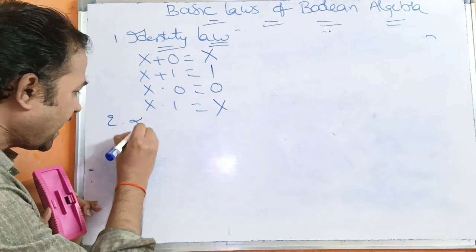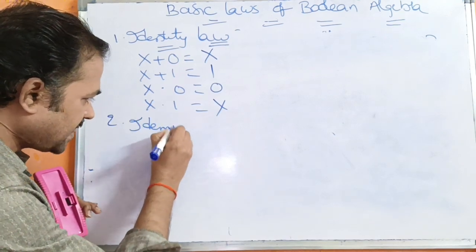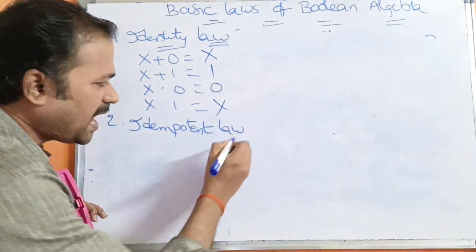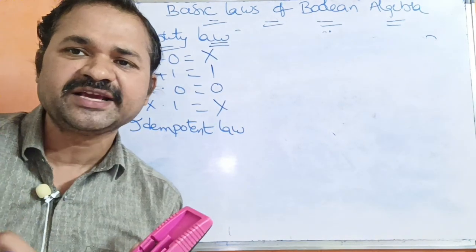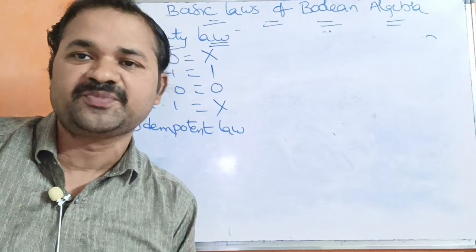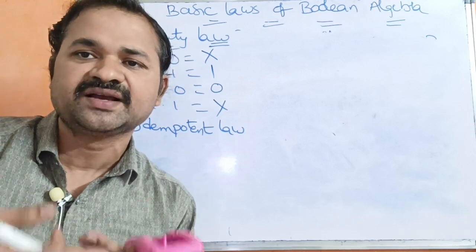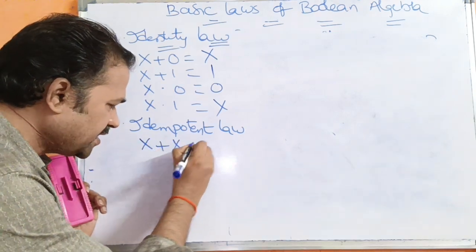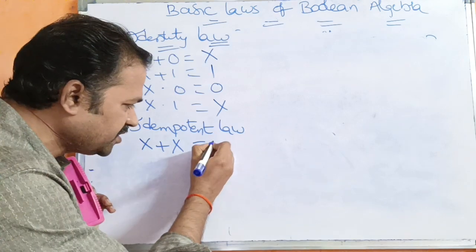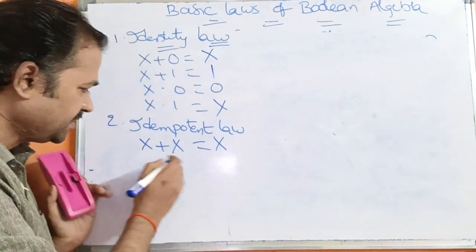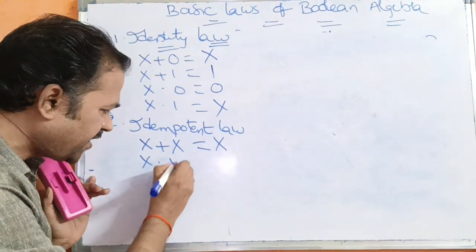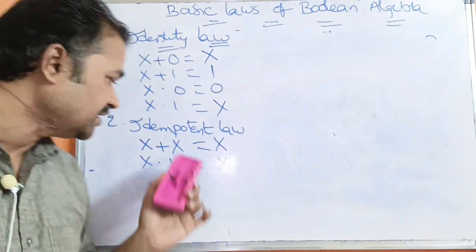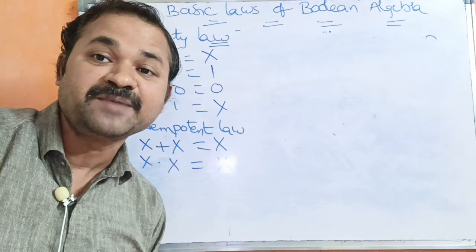The next rule is idempotent law. Idempotent law means we perform OR operation on the same variable or AND operation on the same variable. So x plus x equals x, and x dot x equals x — performing an operation on the same variable returns that variable.